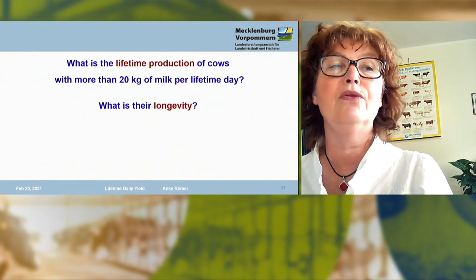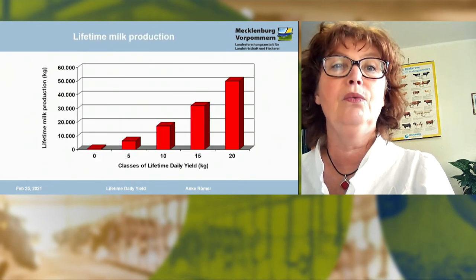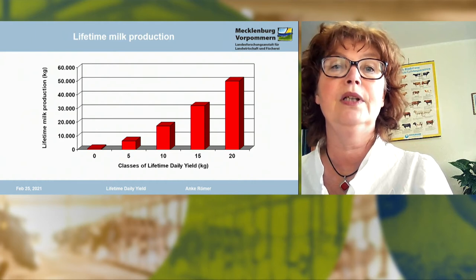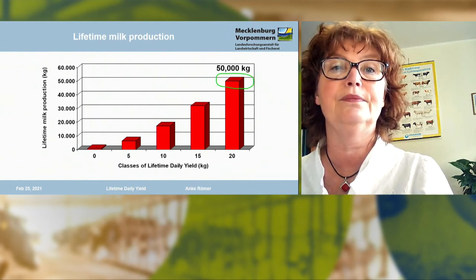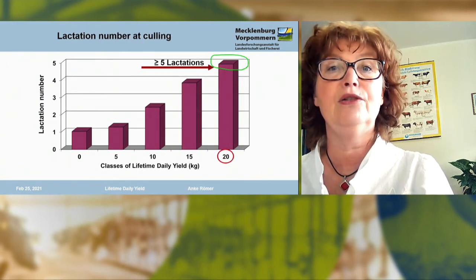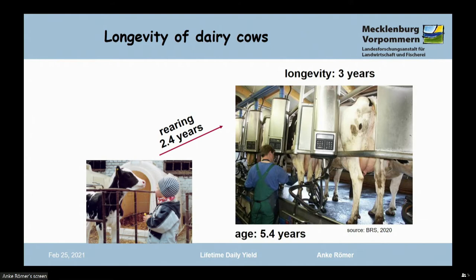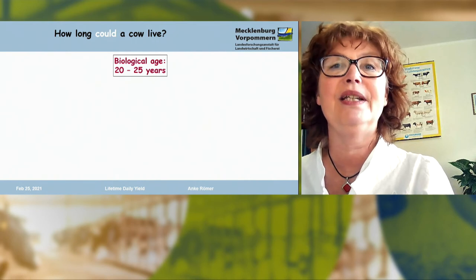What is the lifetime production of cows with more than 20 kilograms milk per lifetime day, and what is their longevity? Cows with 20 kilograms lifetime daily yield achieved 50,000 kilograms lifetime production within at least five lactations. Currently, the longevity of German dairy cows is only three years or 2.7 lactations, so the age of dairy cows is 5.4 years at culling. The biological age of a cow is 20 to 25 years.